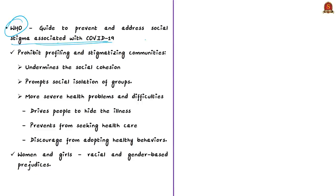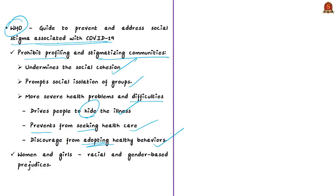WHO cautioned about the dangers of profiling and stigmatizing communities, stating that such practices undermine social bonds, prompt social isolation of groups, increase virus spread, and result in more severe health problems. Stigma drives people to hide illness, prevents them from seeking health care, and discourages healthy behaviors. Women and girls are most vulnerable as they face a double burden of racial and gender-based prejudices.